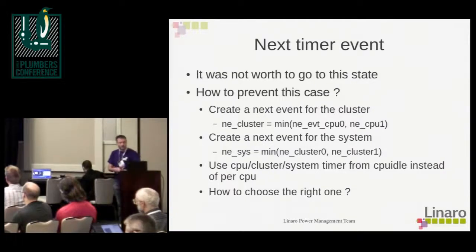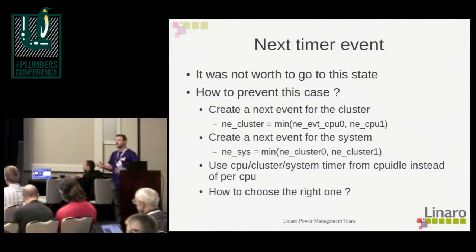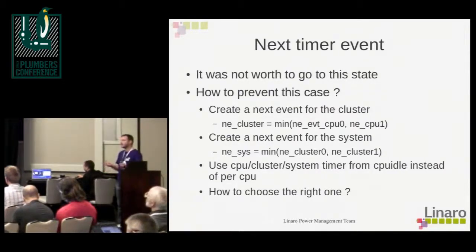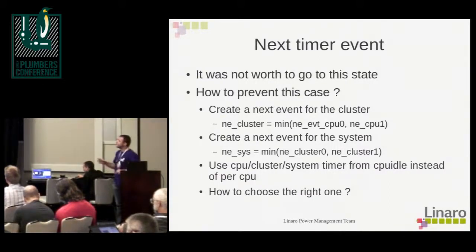How can we prevent this problem? We should have a next event for the cluster. The cpuidle can use the minimum among the next events for each CPU. And we should have the same for the system — if we have different clusters, we can take the minimum for each cluster. From the cpuidle framework we choose the right information: shall we use the per-CPU timer, the cluster timer, or the system timer? To choose the right one, we need topology information.